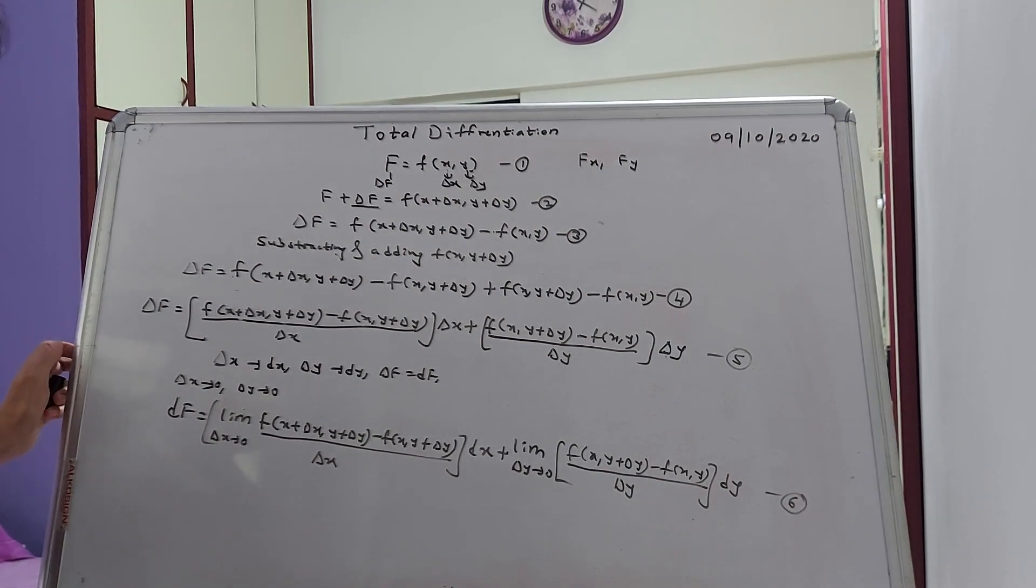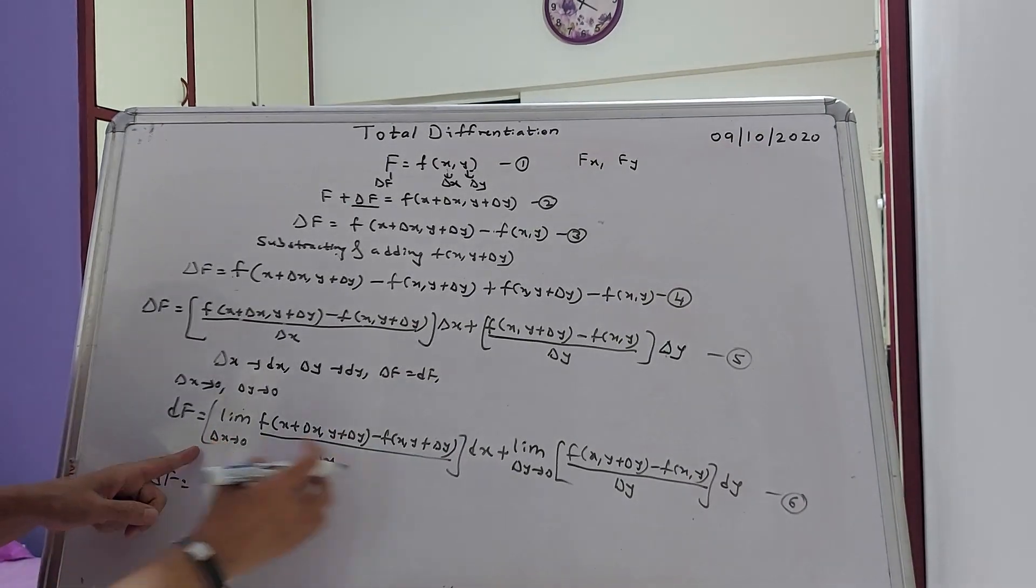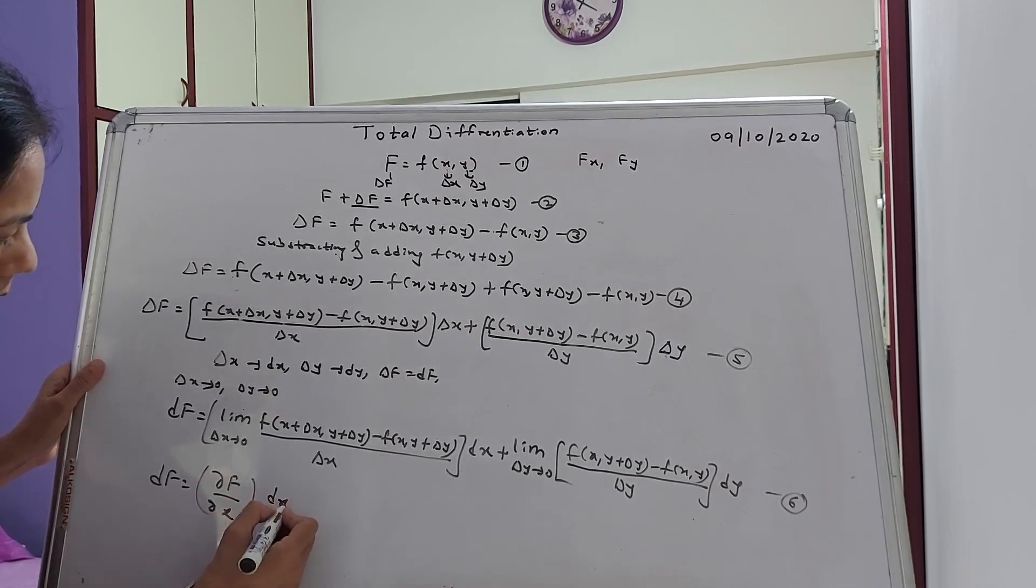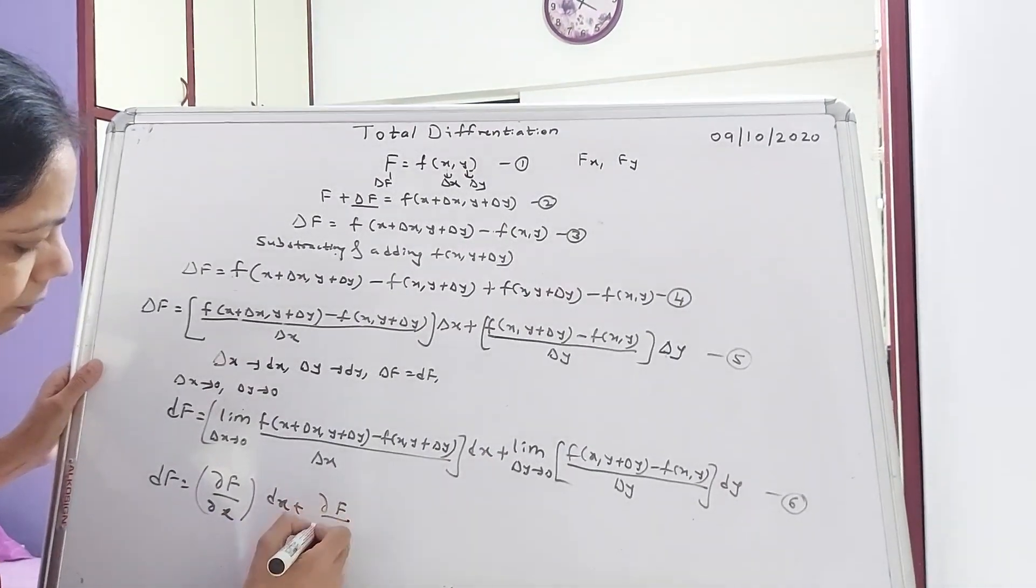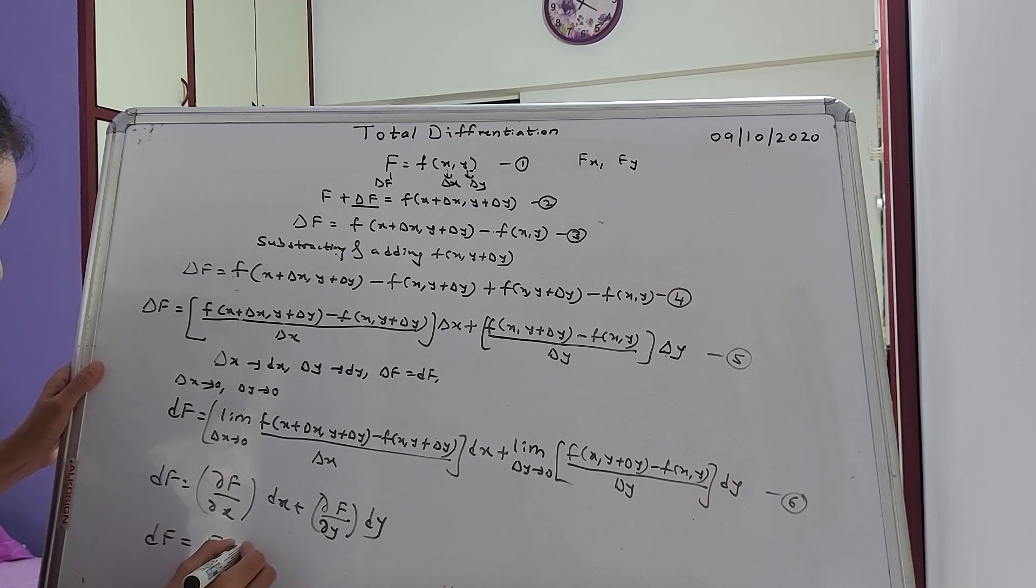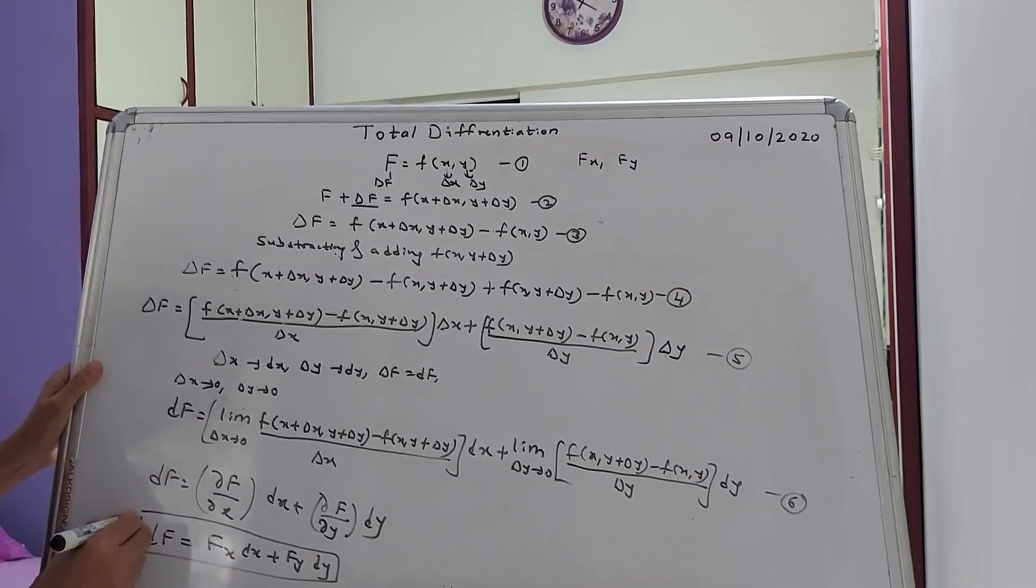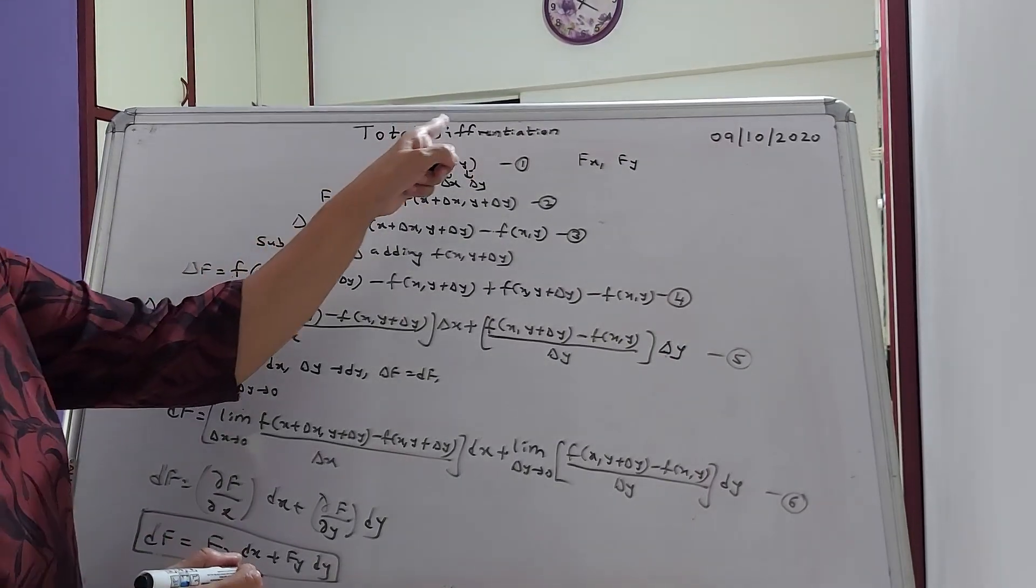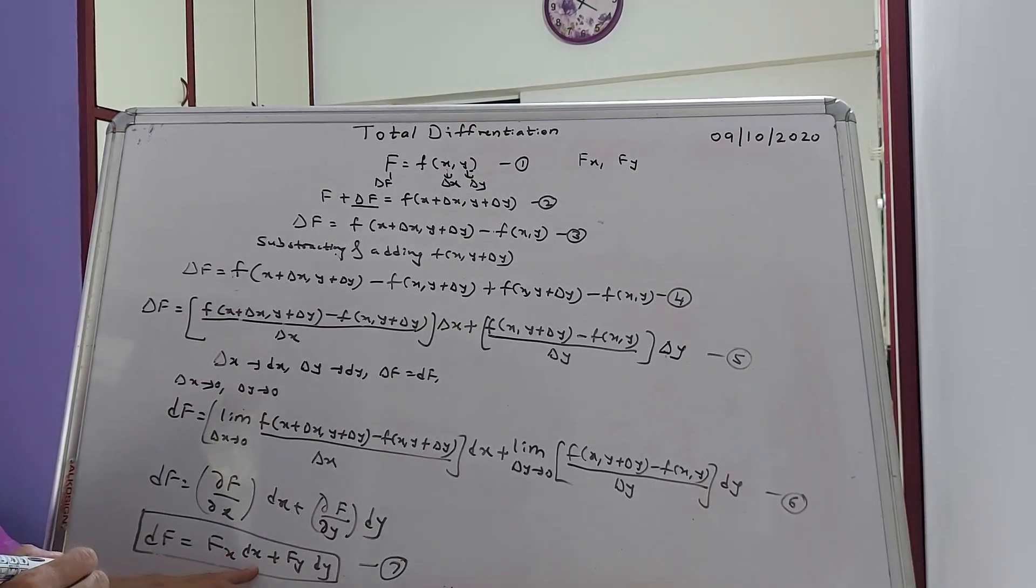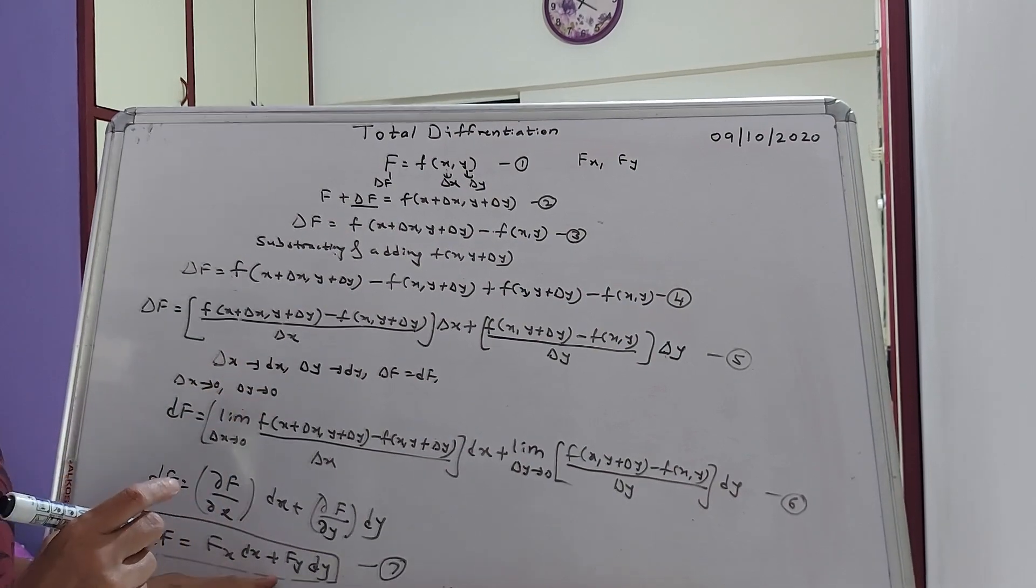So what is happening over here? The bracketed term, limit delta X tends to 0, this term will be called del F by del X, DX. This DX as it is, plus del F by del Y, DY. Or DF is equal to Fx DX plus Fy DY. So this DF on the LHS is called total differentiation of the function F. This is my equation number 7. So DF is Fx DX plus Fy DY. DX is over here and this DY is over here. Now we will try and solve one simple problem with this formula.